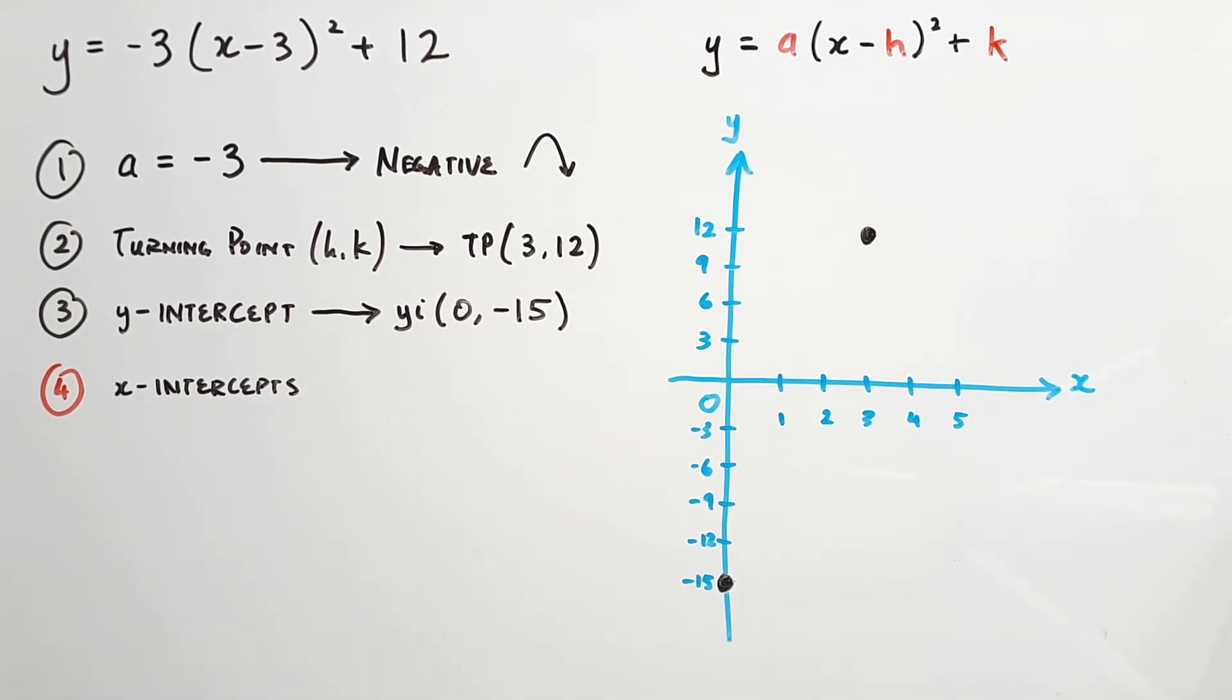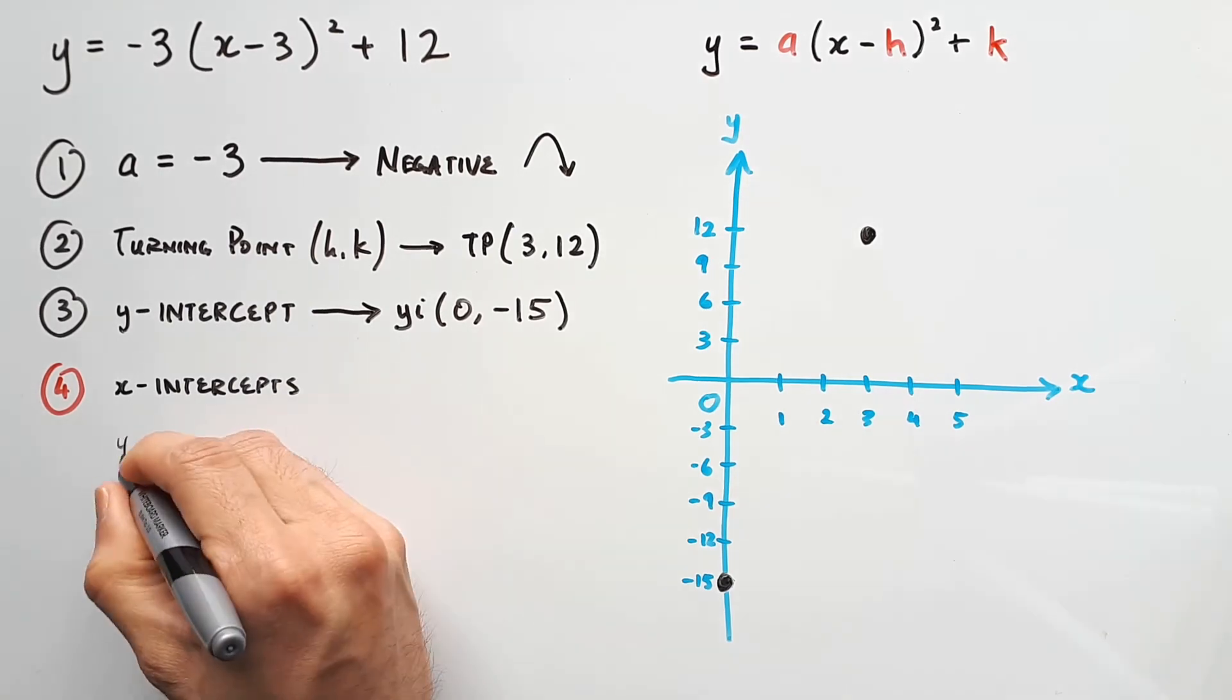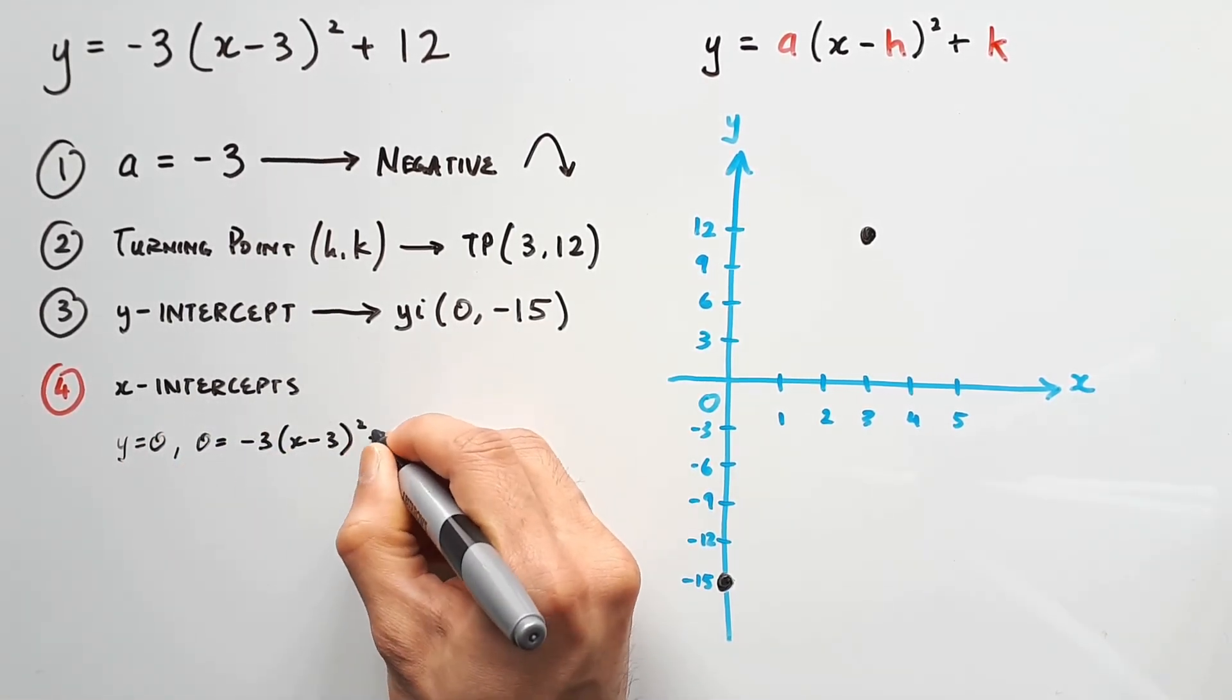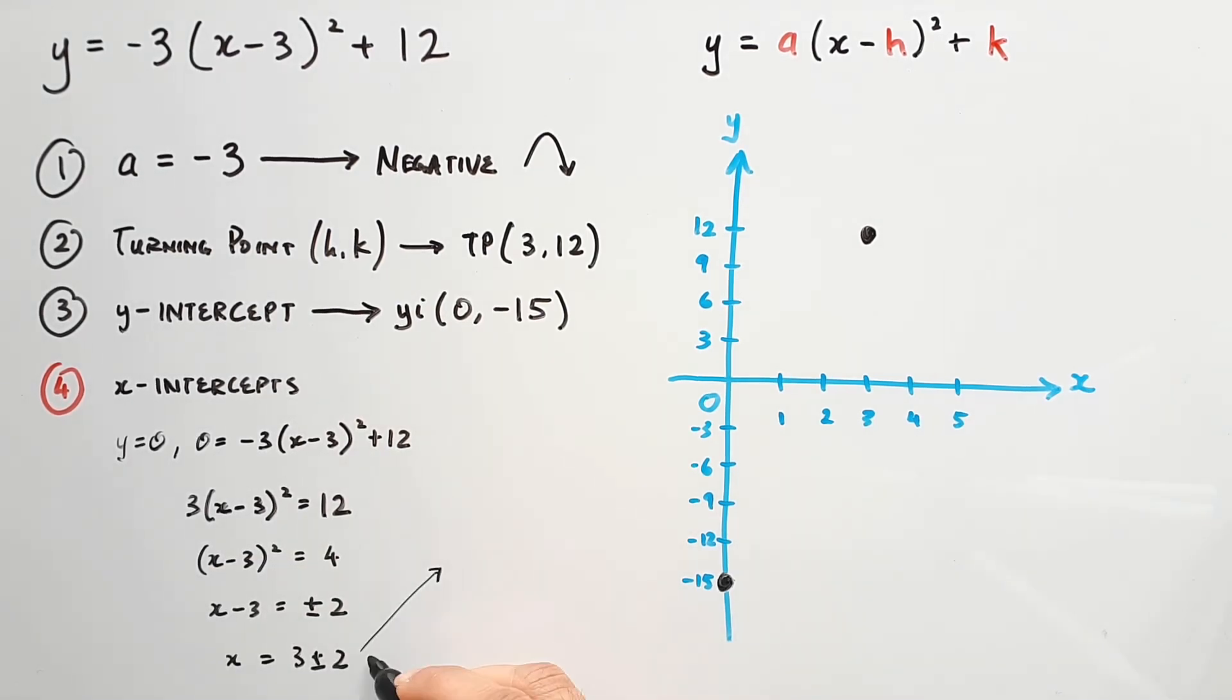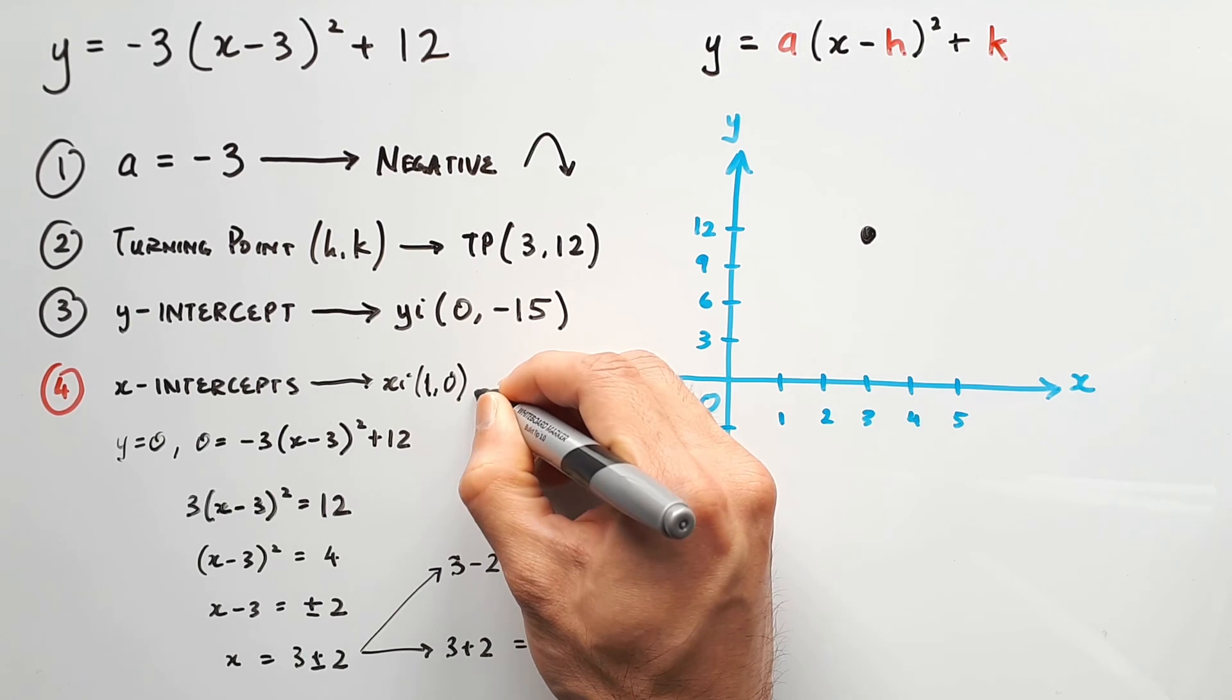But coming back to this one, we can find the x-intercepts by letting y equal 0, and subbing that into the equation. Rearrange it, so that x becomes the subject. So 3 will minus or plus 2, giving us 1 and 5. So the intercepts are at 1 comma 0 and 5 comma 0.